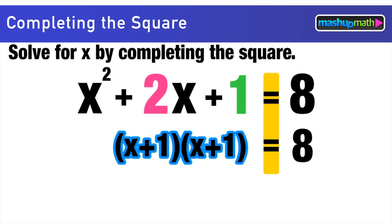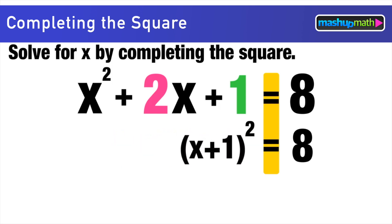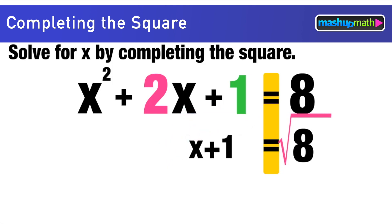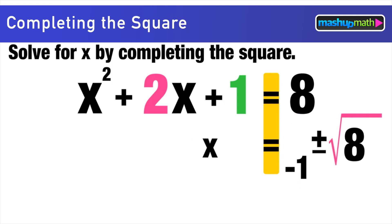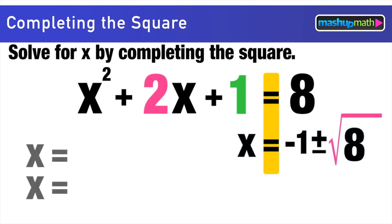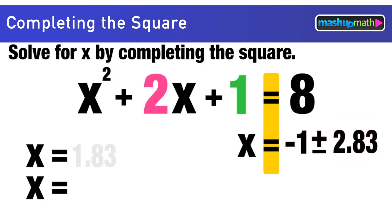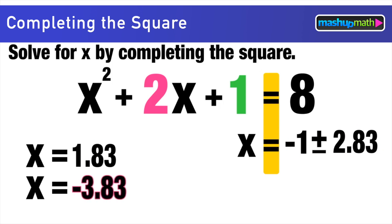We rewrite (x+1)² = 8, then take the square root of both sides. Since 8 is not a perfect square, we leave it under the square root as ±√8. Subtracting 1 from both sides gives x = -1 ± √8. Evaluating √8 ≈ 2.83, our two solutions are x ≈ 1.83 and x ≈ -3.83.